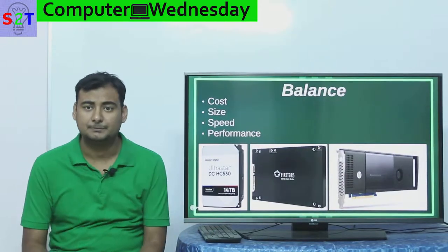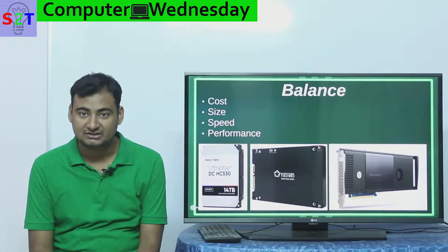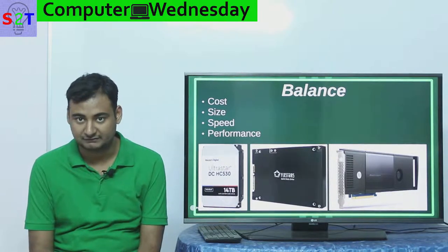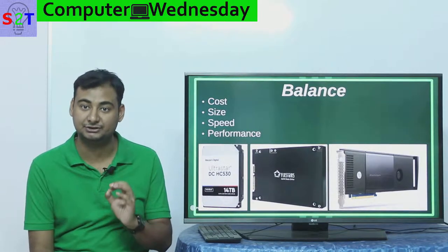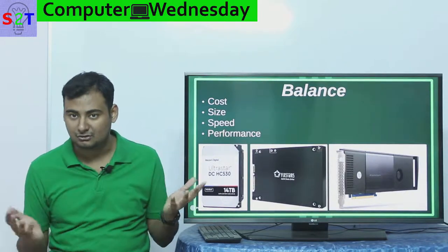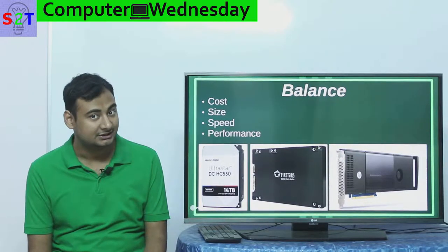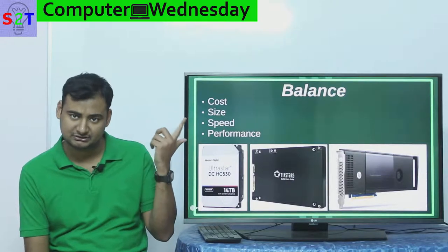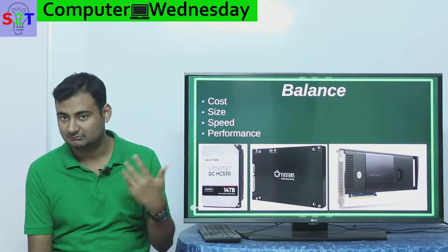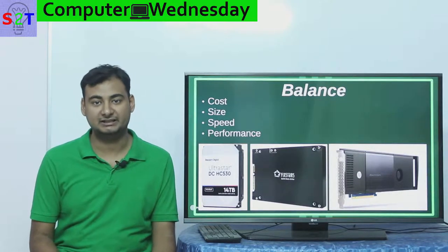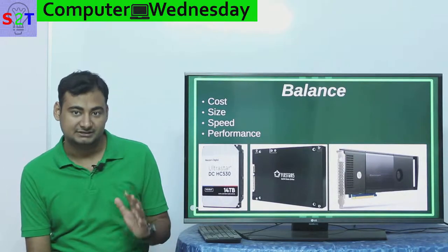Before you decide which storage to buy, understand there is always a balance, always a trade-off. There are four core components you must balance for your needs. First is cost — you could spend a lot of money for the best performance, but you have to decide your budget. Within cost, there are two factors: the raw cost, and the cost per gigabyte or dollar per terabyte, which shows how efficient your expenditure is.